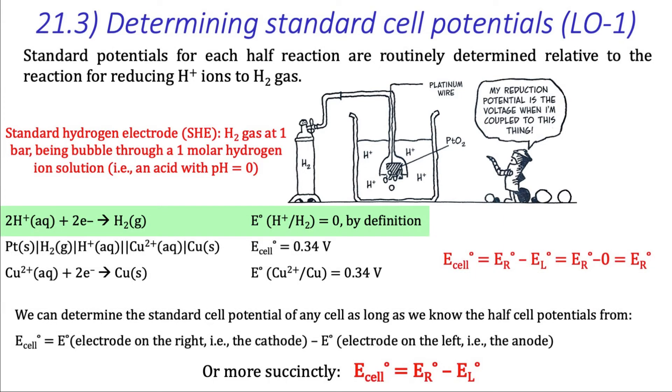The standard hydrogen electrode serves as the anode, and the test electrode serves as the cathode. We set the half-cell potential of the standard hydrogen electrode to zero by definition, and so as a result, the standard cell potential we measure equals the standard half-cell potential of the test electrode.